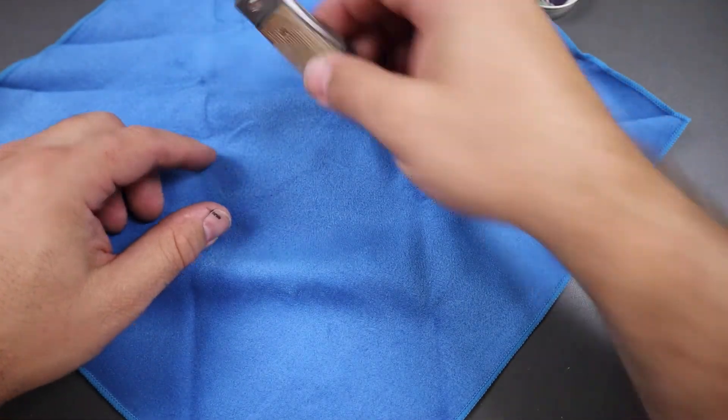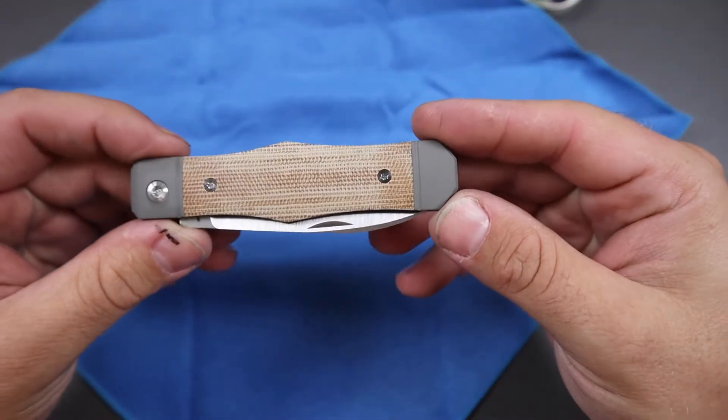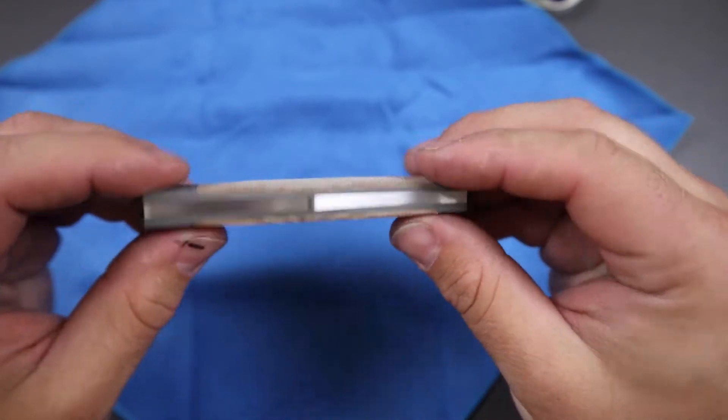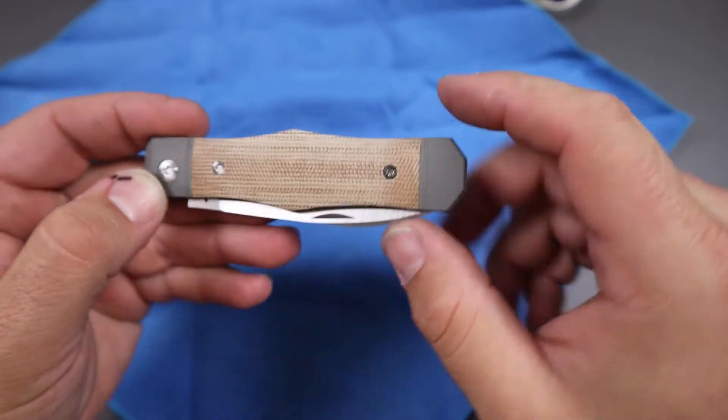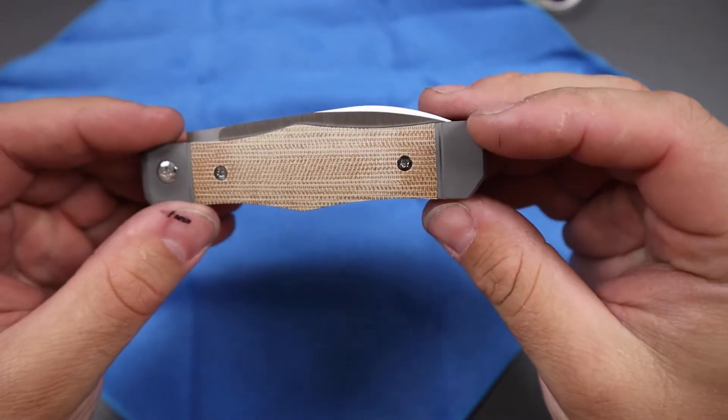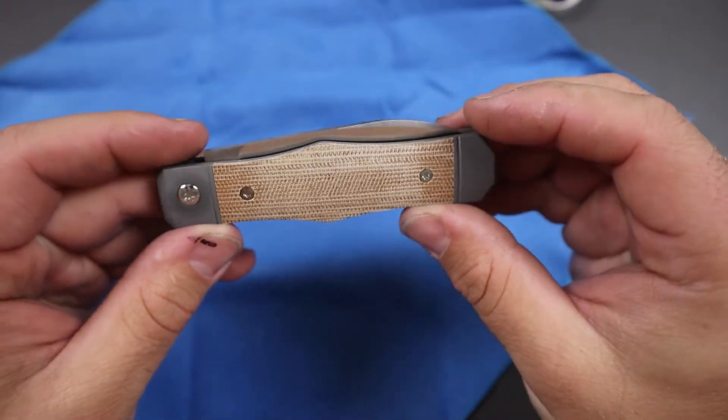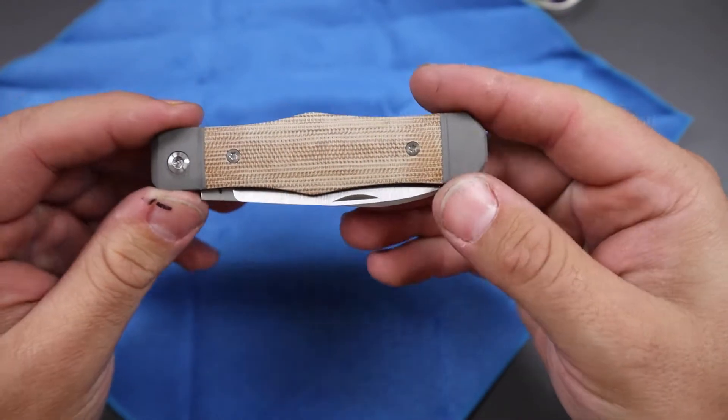And there she is. We have the Vampire Jack. This one is a natural micarta, obviously. I just really like this very unique kind of handle shape. To some people it may seem like it's